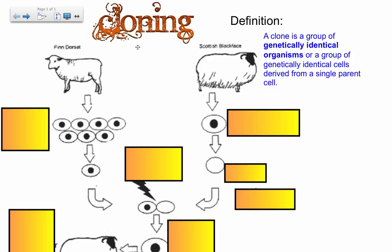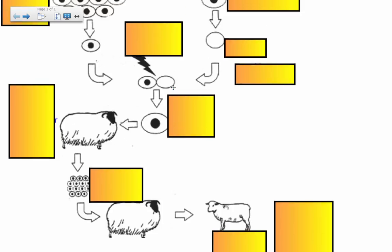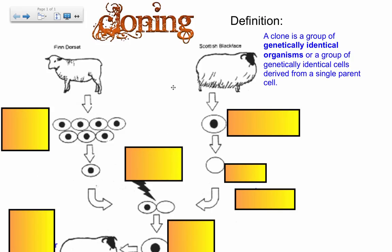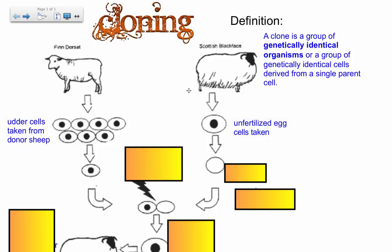To make Dolly, the idea is to create her from an adult differentiated cell. We have a couple of sources. From the Scottish blackface sheep, we take an unfertilized egg cell — this is not an adult cell. This egg cell, if fertilized by sperm cells, would just develop into a normal regular sheep.